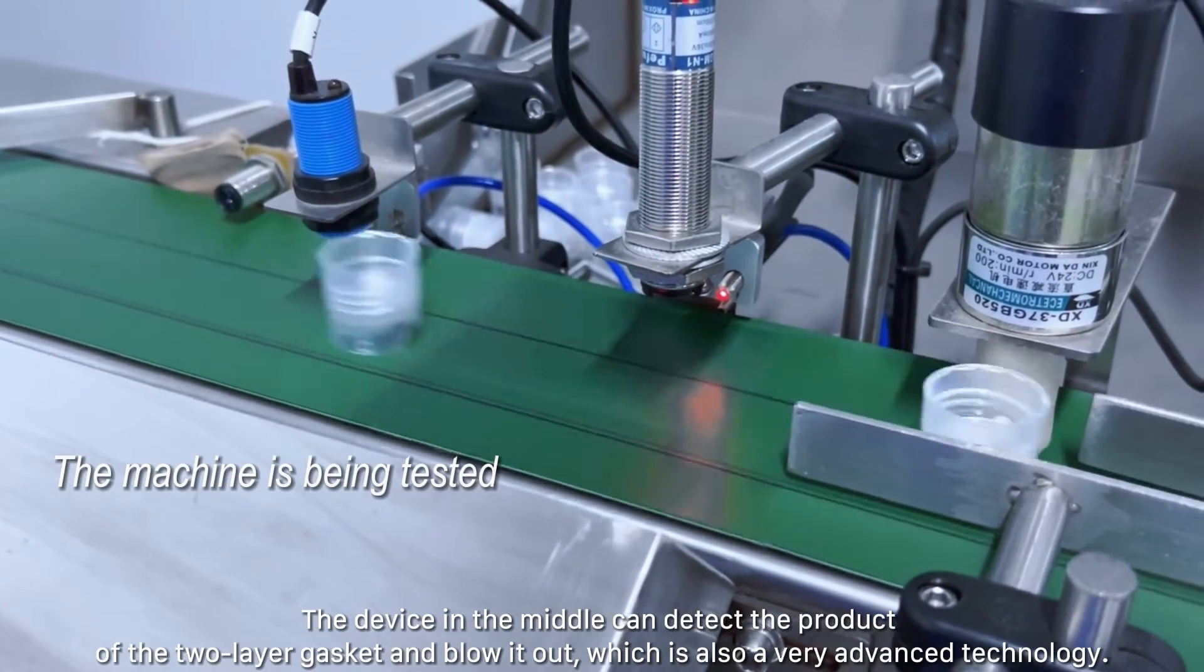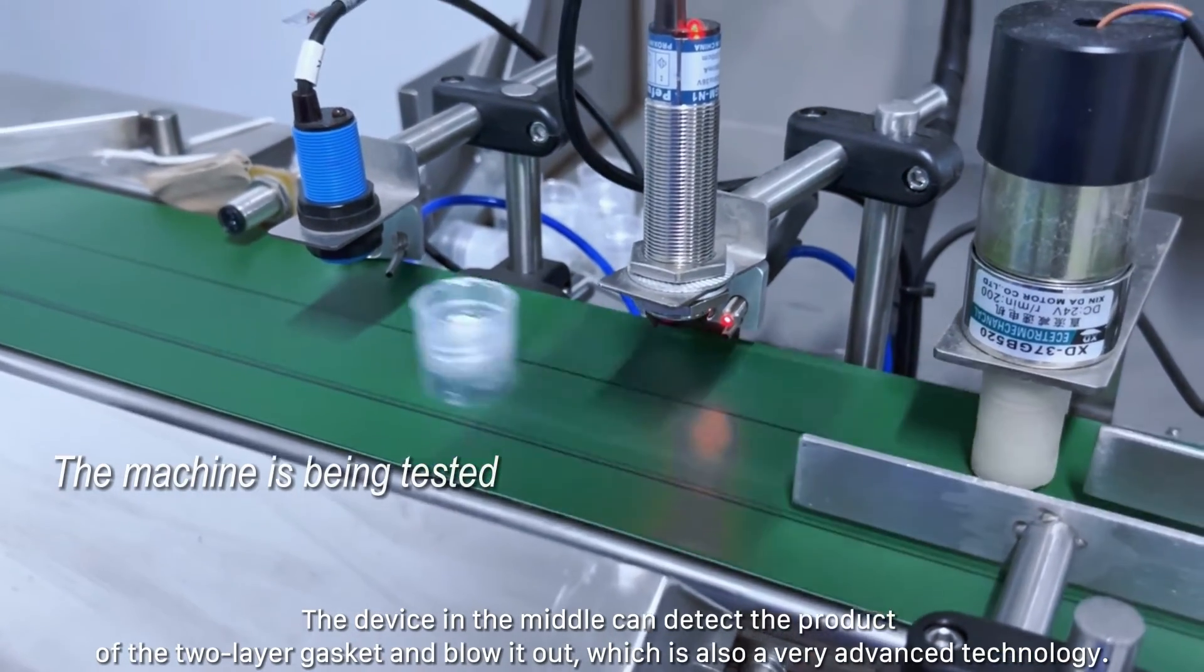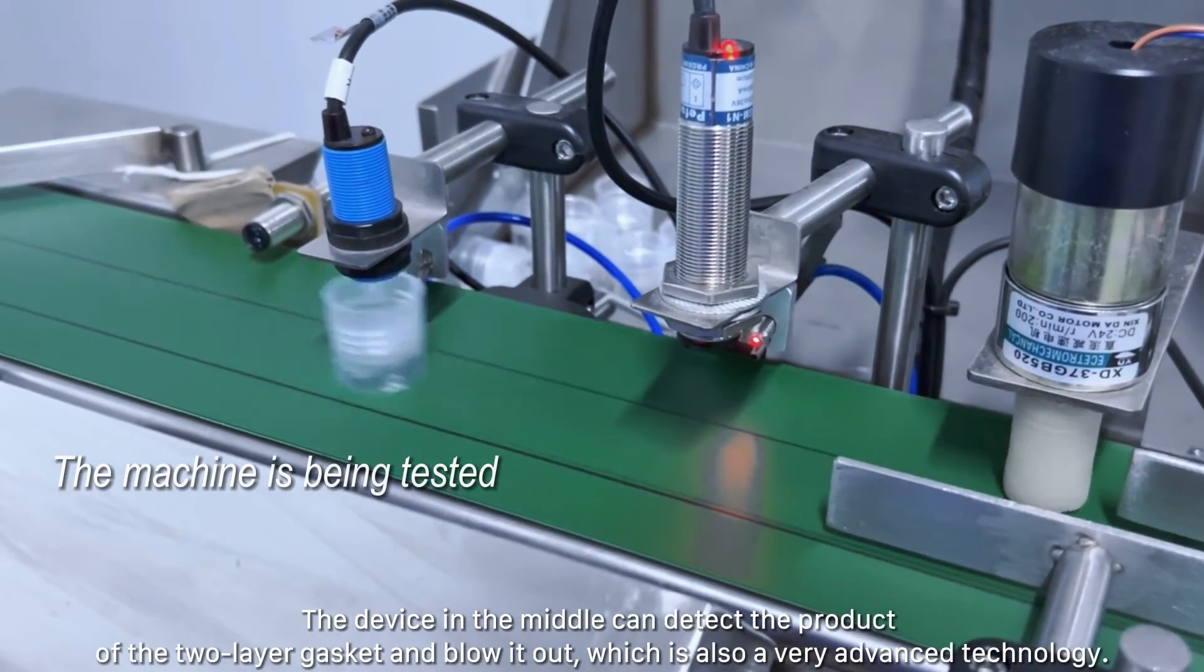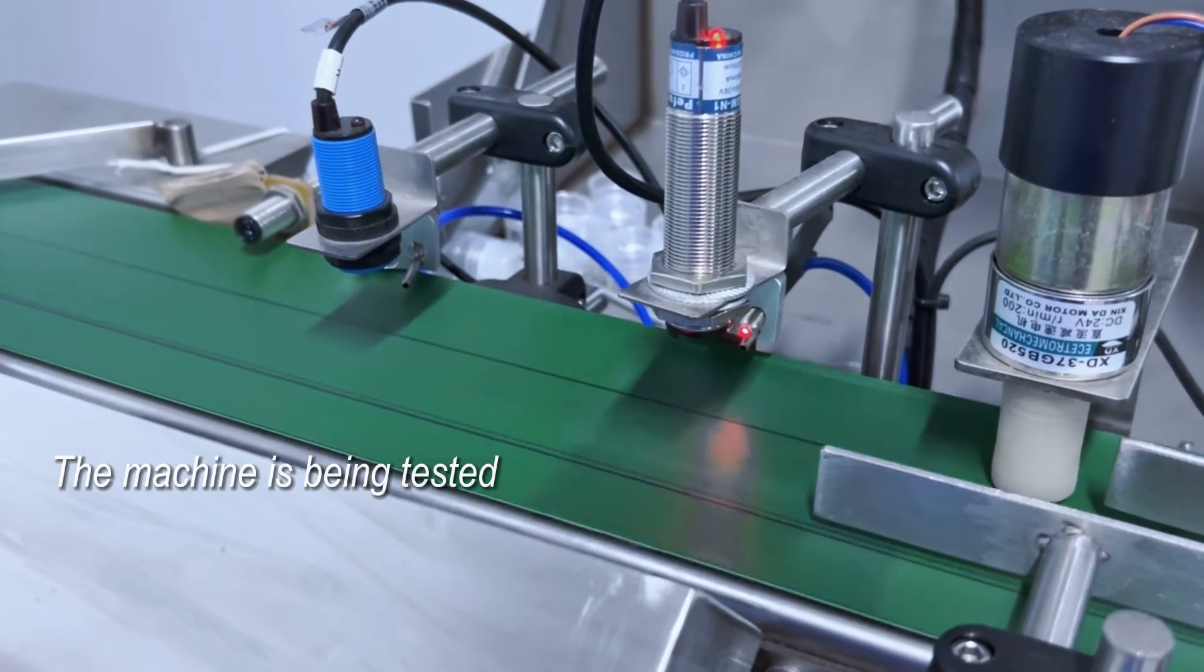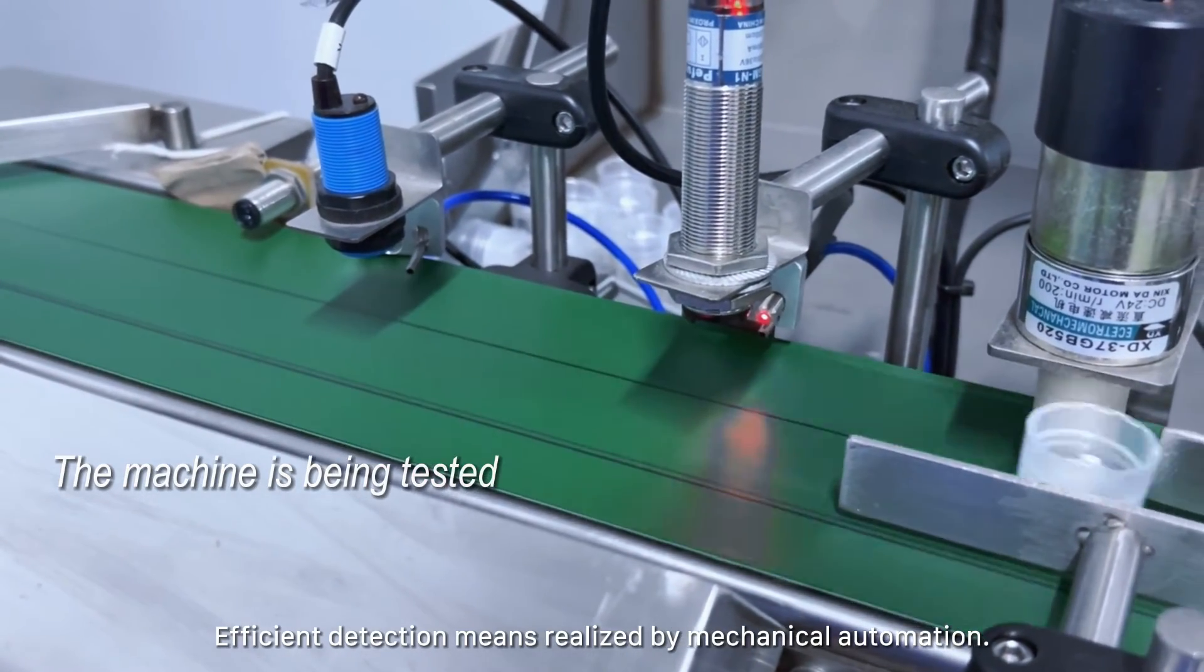The device in the middle can detect products with tool layer gasket defects and blow them out, which is also very advanced technology. Efficient detection means realized by mechanical automation.